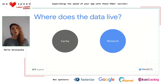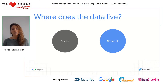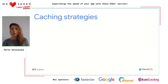Now I want to tell you about caching strategies. There are two factors to consider. First, where does the data live in your app? Currently, you have two options to retrieve your data: from cache and from the network. Based on those options, we have different caching strategies.